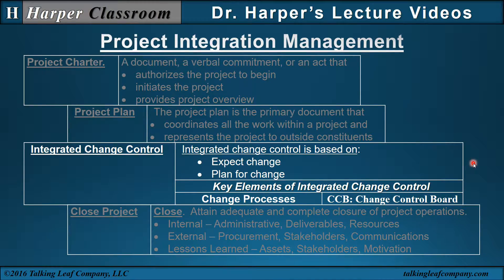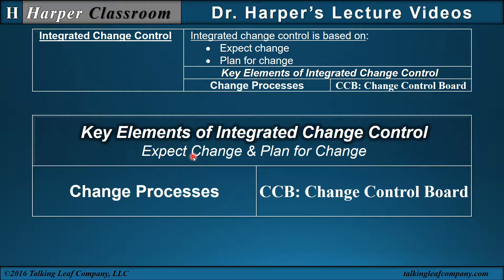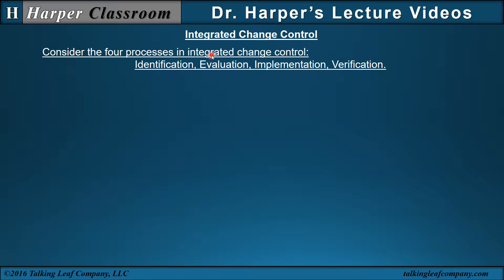Next, let's look at integrated change control. Integrated change control is based on two mandates: expect change and plan for change. The key elements are change processes and the change control board. Because of the unique nature of projects and the dependency on finite time, change processes must be defined, communicated, and followed. The change control board, as the decision-making body for change, is responsible for strict implementation of these processes. Consider the four processes in integrated change control: identification, evaluation, implementation, and verification.